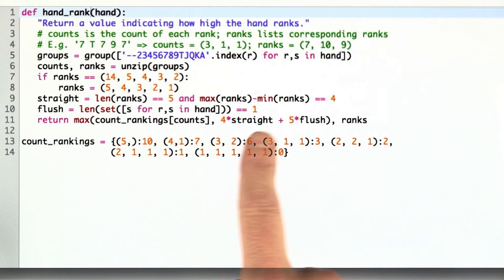And that will give you a value for anything having to do with pairs or three or four of a kind, and take the maximum of that and this expression here, which says four times straight plus five times flush.